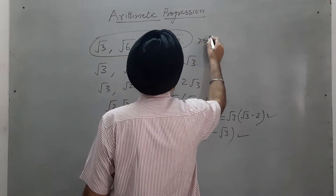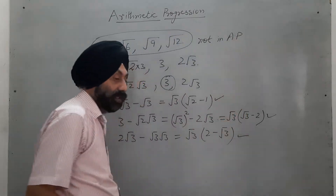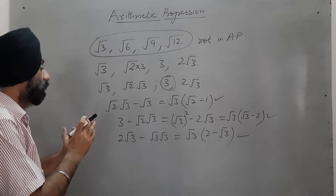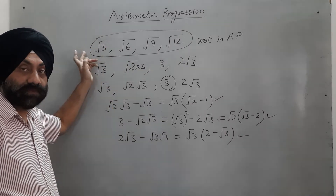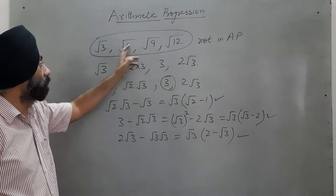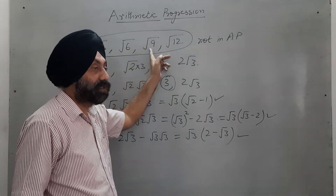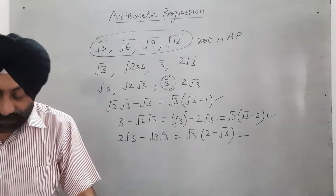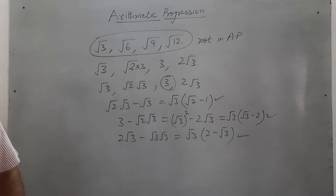They are not in AP. The common difference must be the same — second term minus first, then third term minus second, then fourth term minus third — and here it is not coming out constant.